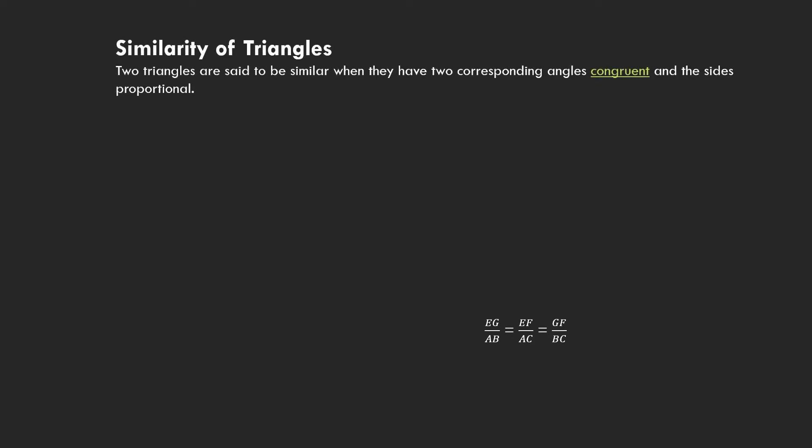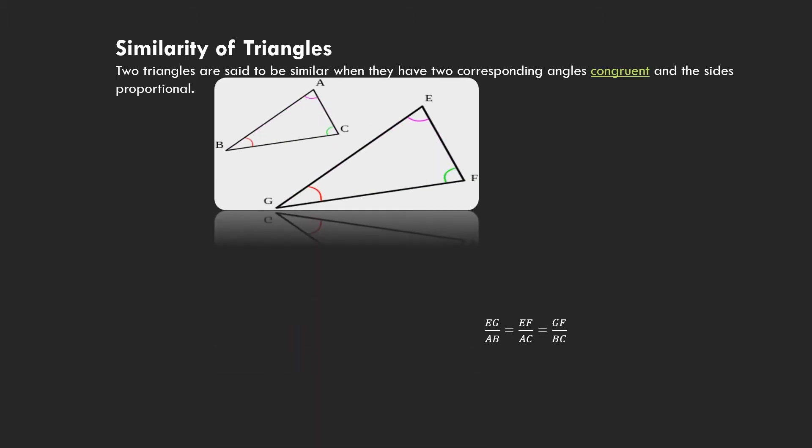Now we will see the concept of similarity in triangles. Similarity occurs in different figures, but for today we will see the similarity of triangles. How can we say triangles have similarity? Two triangles are said to be similar when they have two corresponding angles congruent — congruent means same — and the sides proportional. Then we can say there is similarity between two triangles.